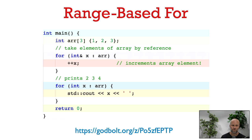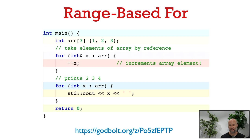Sometimes I might want to change the elements of the array, and I can do that by taking them by reference in the range-based for loop. So now in the for loop, I say for (int& x : array). This is going to iterate over the elements of the array from beginning to end, and lets x be a reference to each element. So now a change to x will also change the array element. In the body of the first for loop, when I increment x, I'm actually changing the array element. So now when I print out the elements of the array again, I get the values 2, 3, 4 instead of the original values 1, 2, 3.